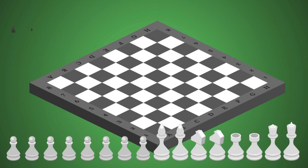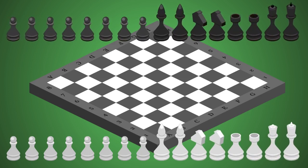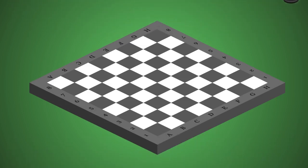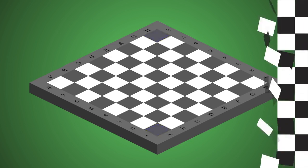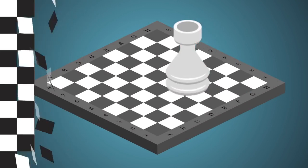The player with the white pieces goes first. Each chess piece has a name and specific move capabilities. Don't forget to position the board correctly before playing. Each player should have a dark square in their lower left corner.